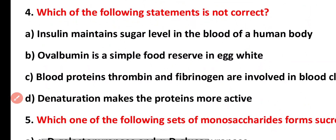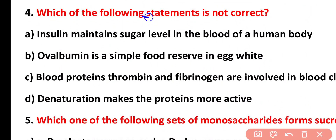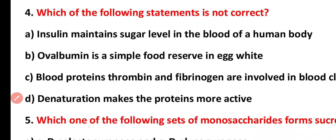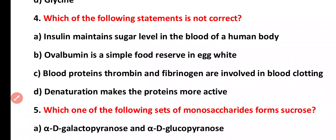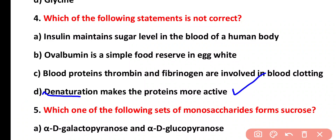Question four: which of the following statements is not correct? Option A: insulin maintains sugar level in the blood. Option B: ovalbumin is a simple food reserved in egg white. Option C: blood proteins thrombin and fibrinogen help in blood clotting. Option D: denaturation makes the protein more active. The incorrect statement is option D, because denaturation causes enzymes to become inactive.